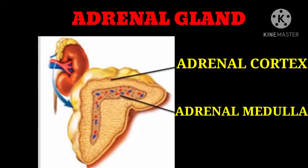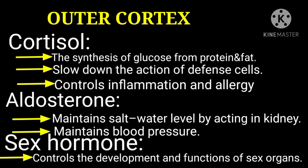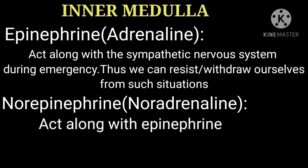It looks like a cap. It has an adrenal cortex and adrenal medulla. The outer cortex secretes hormones: cortisol, aldosterone, and sex hormones. Cortisol synthesizes glucose from protein and fat, slows down the action of different cells, and controls inflammation and allergy. Aldosterone maintains salt-water level by acting on the kidney, thereby maintaining blood pressure.